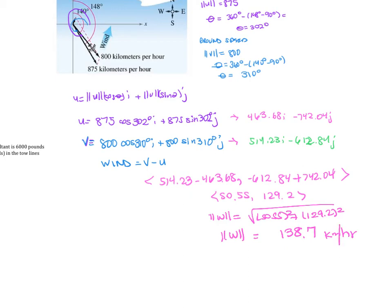Now we want to find the direction of the wind. Remember that we're going to use tangent of theta. Tangent of theta is B over A, so that's going to be 129.2 over 50.55, and theta is 68.63 degrees.